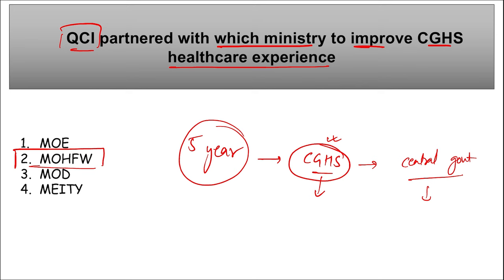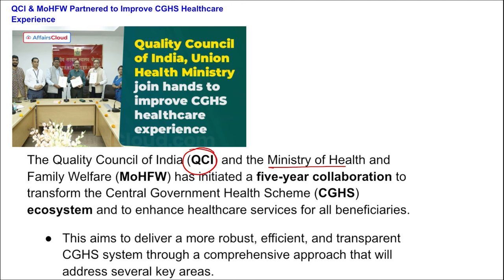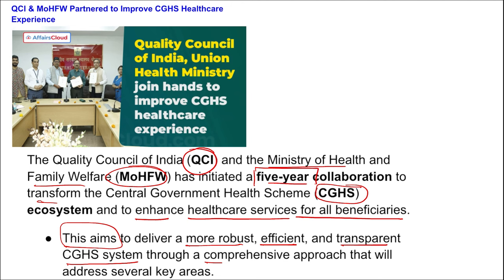To improve and provide a better ecosystem and enhanced healthcare services to all CGHS beneficiaries, QCI partnered with the Ministry of Health and Family Welfare for five years to transform the CGHS ecosystem. This aims to deliver a more robust, efficient, and transparent CGHS system through a comprehensive approach addressing several key areas.